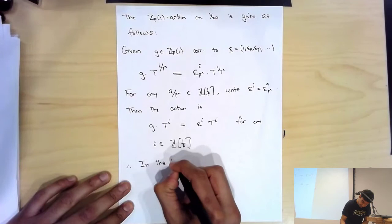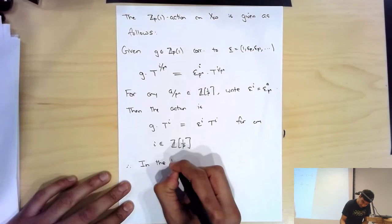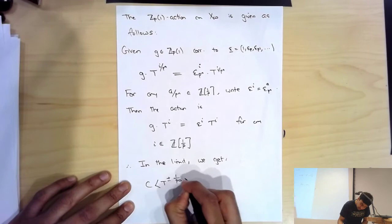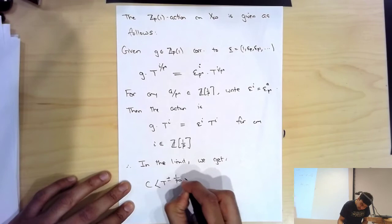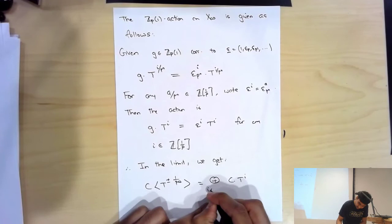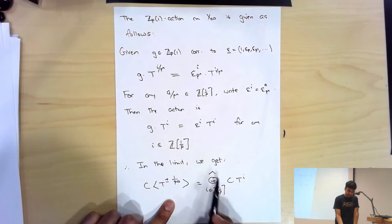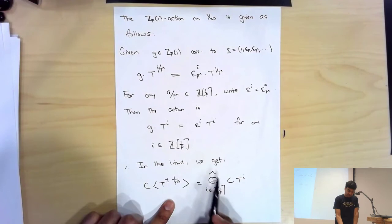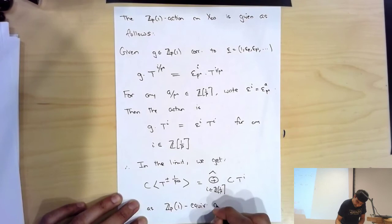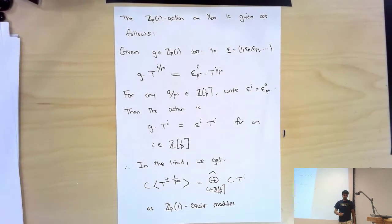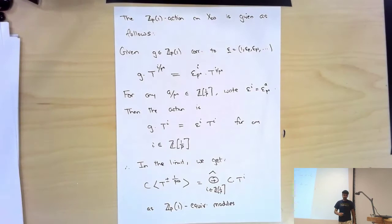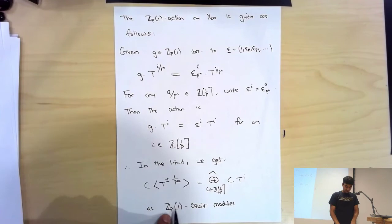Therefore, in the limit we get a decomposition of the coordinate ring of the affinoid perfectoid: C⟨t^{±1/p^∞}⟩ decomposes as a completed direct sum of C · t^i over i ∈ Z[1/p]. By the formula just written, this is also a Z_p(1)-equivariant decomposition. We'll use this to compute certain group cohomology: it decomposes into computing the group cohomology of Z_p(1) acting on one-dimensional vector spaces.